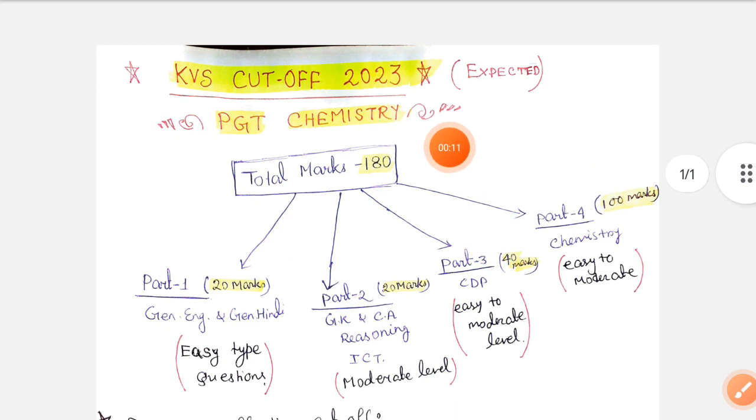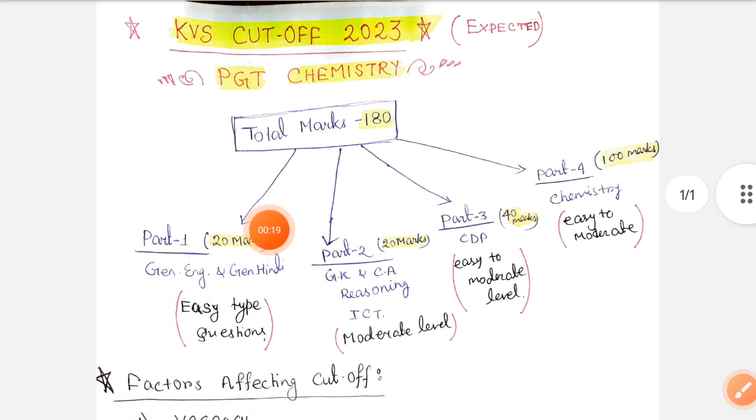Total marks in the exam is 180. If we divide these parts in four subcategories, then Part 1 is English, General English and General Hindi. These questions are very easy type questions. Part 2 is moderate level.